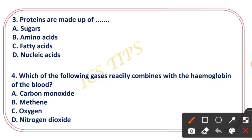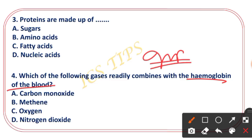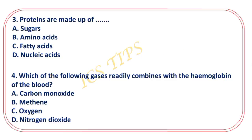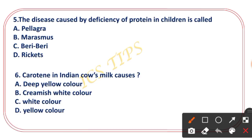Which of the following gases readily combines with the hemoglobin of the blood? Options: carbon monoxide, methane, oxygen, nitrogen dioxide. The right answer is carbon monoxide — carbon monoxide combines readily with hemoglobin of the blood.